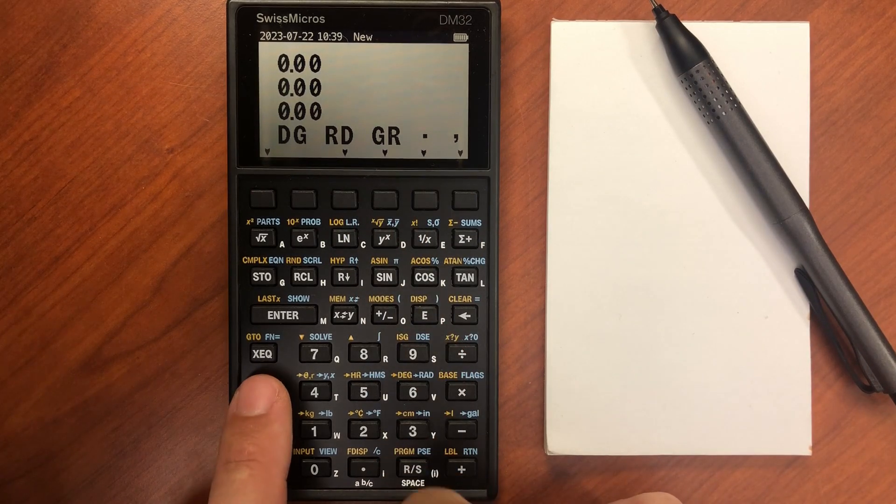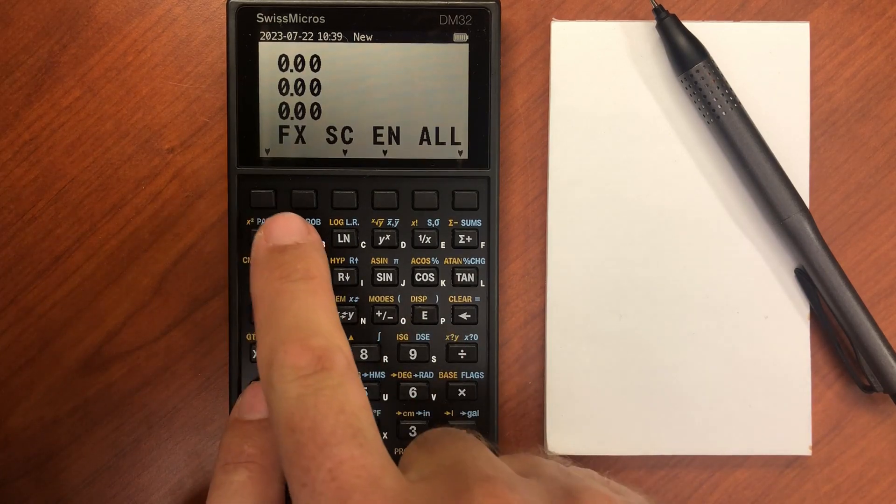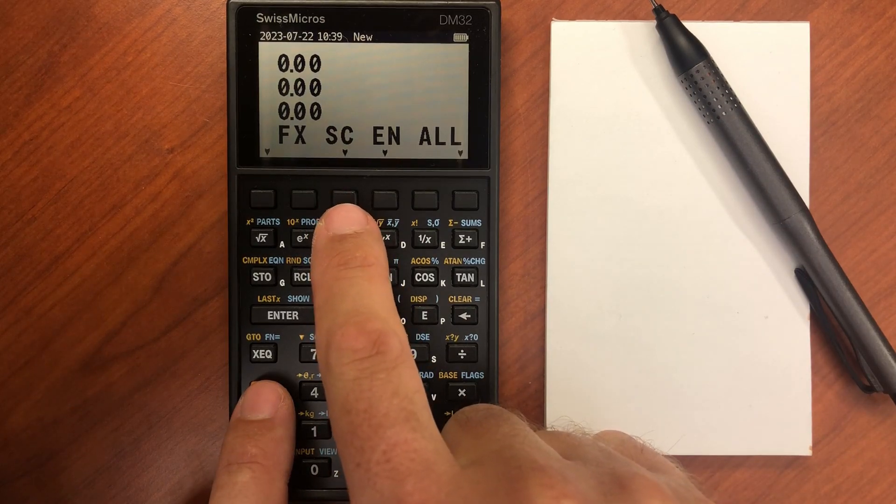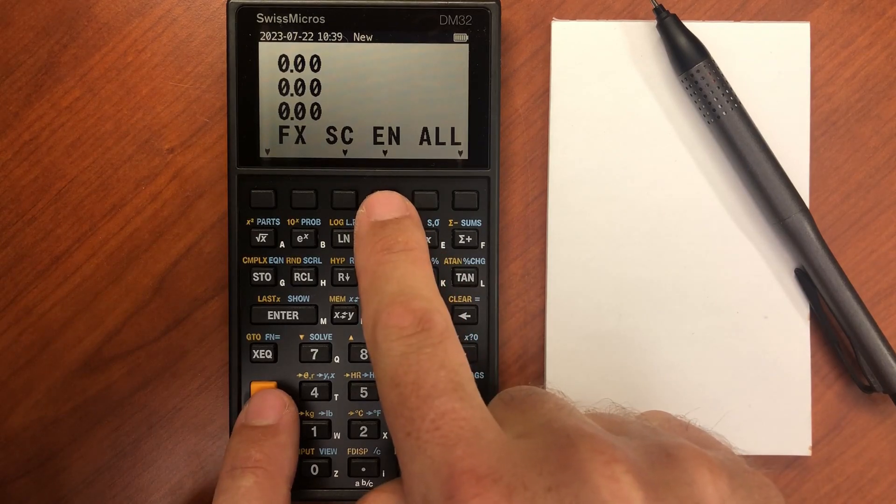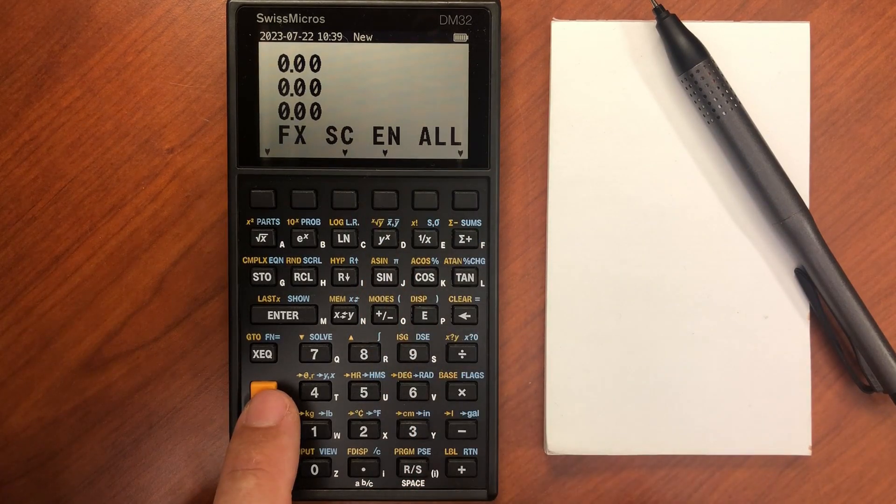And then lastly we have the display menu. So gold shift display. And we can set it to fixed, so a fixed number of decimal positions. Set it to scientific mode with its exponent and engineering mode with a multiple of three for your exponent. And then all to show all the digits available.